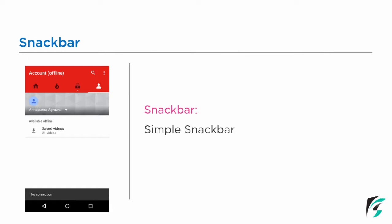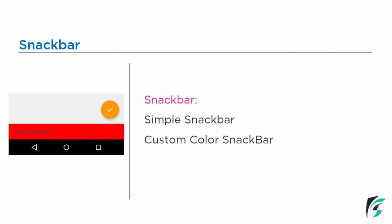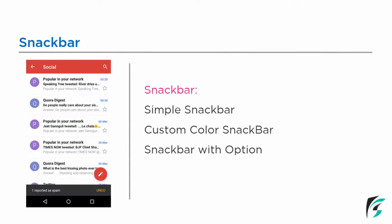The next category is the custom color Snackbar, which implies we can customize our Snackbar according to our wish. We can use color to beautify our application UI and make it more attractive. In this example on the left side, the background of the Snackbar has been changed from the default gray to red. We can also change the color of the text message and the color of the action button text. The third category is the Snackbar with action callback — the Snackbar where we can perform a certain action. These are the three kinds of Snackbar: simple Snackbar, custom color Snackbar, and Snackbar with options.